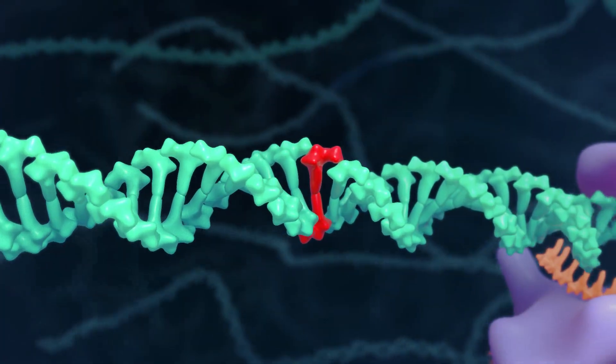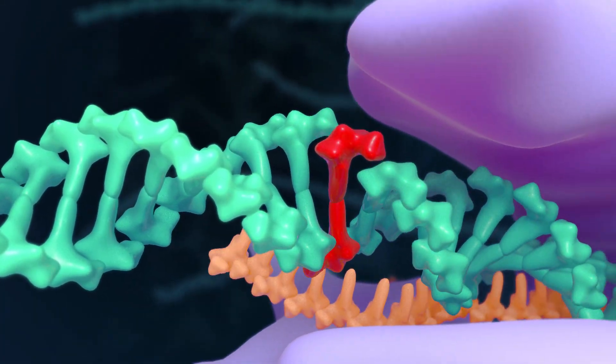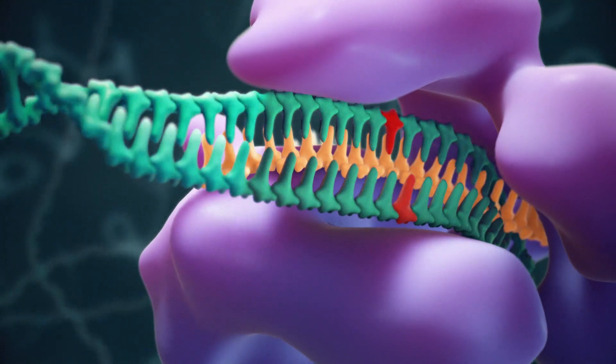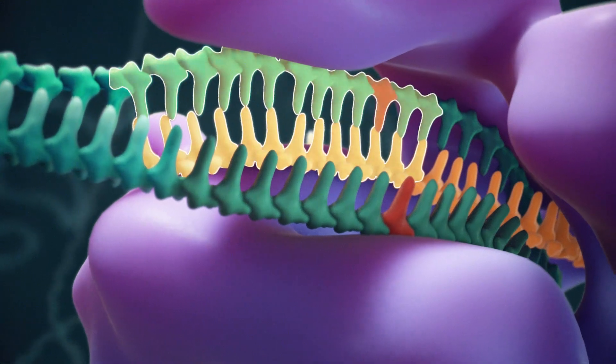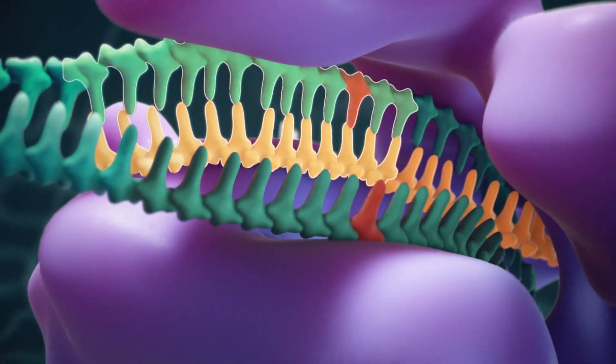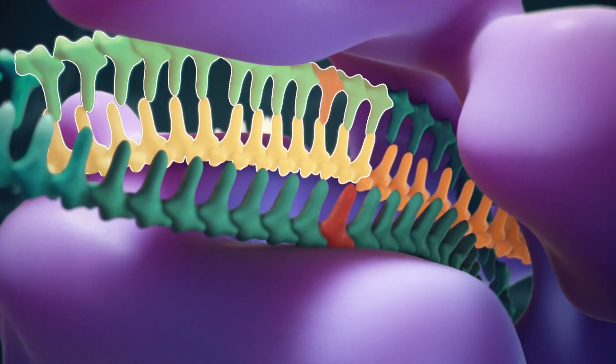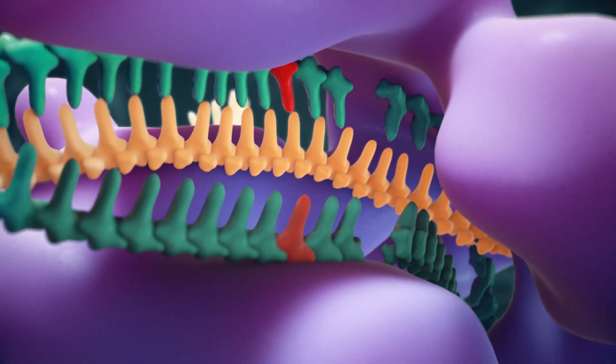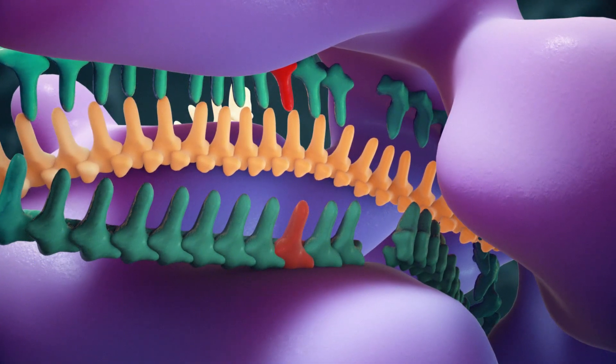At a potential target site like the one shown here, Cas9 unwinds a section of DNA to see if the guide RNA sequence matches. If the DNA sequence matches the guide RNA, the Cas9 nuclease cuts the DNA to create a break in the strands.